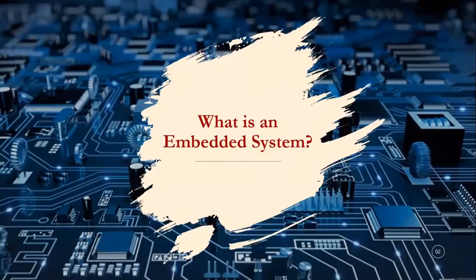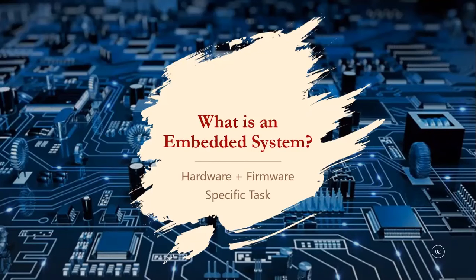So what is an embedded system? To keep it simple, an embedded system is a system where hardware is embedded with software. In embedded systems, the software is developed by the firm or manufacturing company, and hence it's called firmware. It's a combination of hardware and firmware designed to do a specific task, in contrast to general-purpose computing systems, which have general hardware and software.